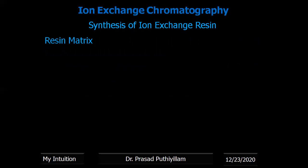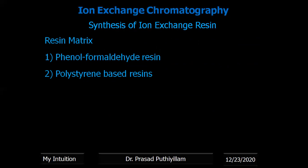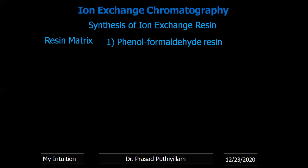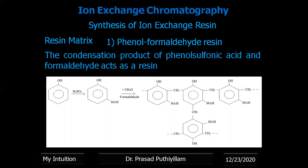The initial ion exchange resins were prepared with phenol formaldehyde. Then polystyrene-based resins were introduced, and nowadays around 90% of polymer ion exchange resins are polystyrene-based. Phenol formaldehyde resins are prepared by reacting phenol with sulfuric acid to form phenol sulfonic acid, which then reacts with formaldehyde in a condensation reaction to give a cross-linked structure with CH2 linkages between the sulfonic acid groups.